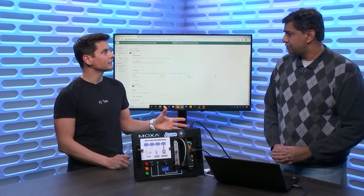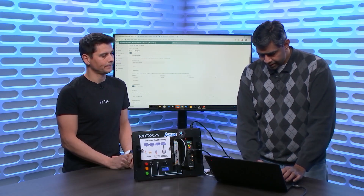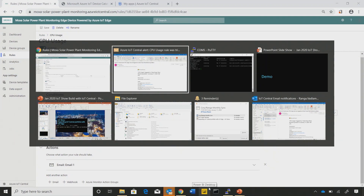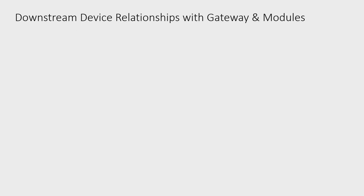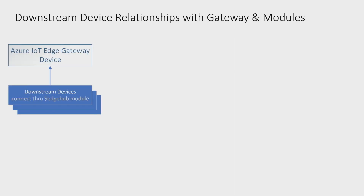Let's switch to the gateway scenario and discuss the hierarchy and relationships. We have an Edge gateway device with downstream devices. The transparent gateway pattern means downstream devices are Wi-Fi enabled but go through the Edge gateway device — for example, for offline scenarios like a truck in a remote location that loses connectivity, with a fresh produce chiller where the driver needs to be notified. In such cases, devices connect through the Edge gateway to reach the cloud.